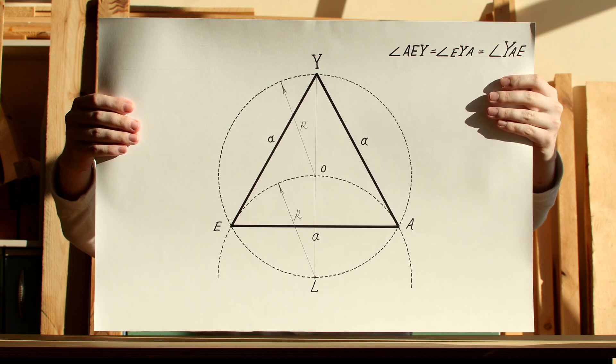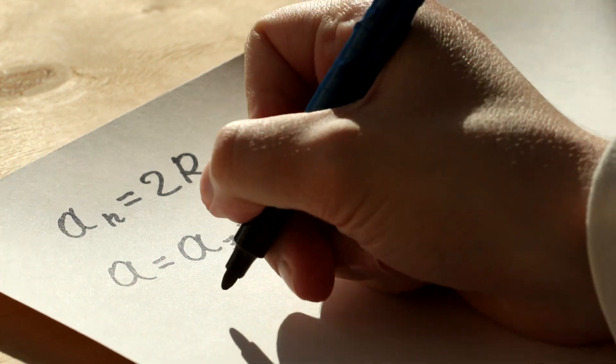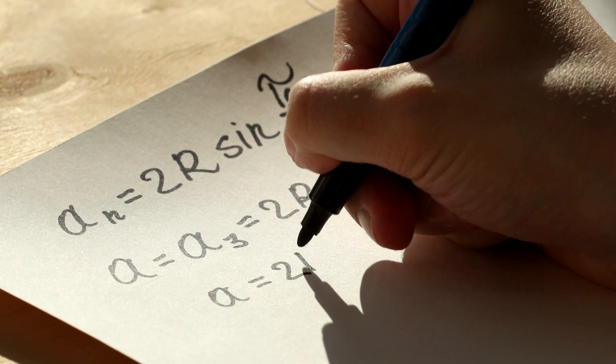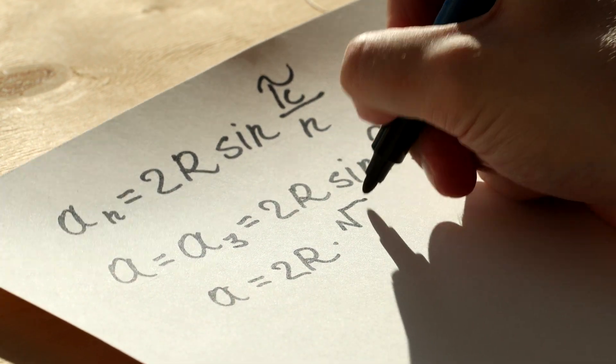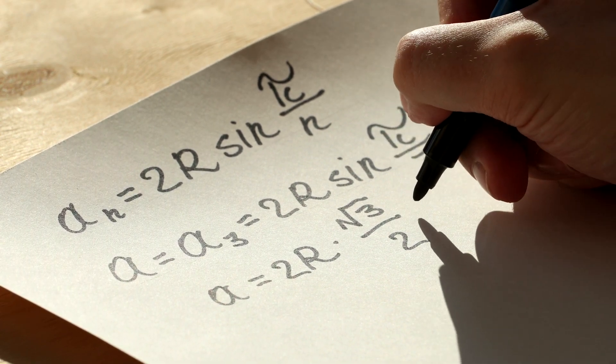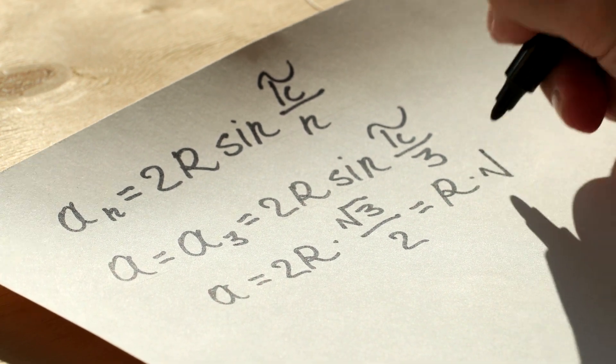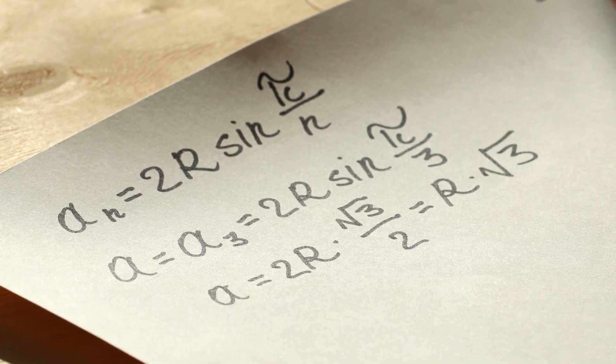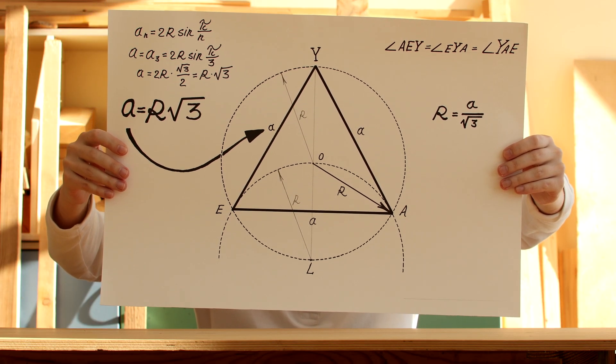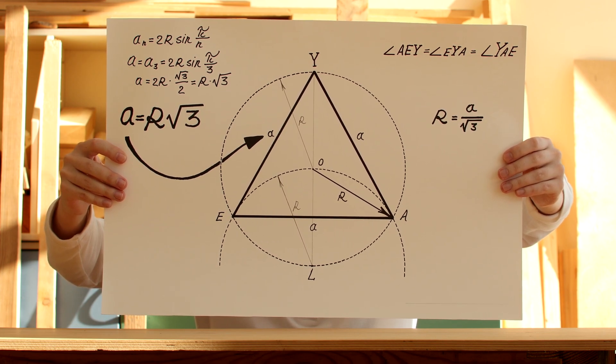The side length of an equilateral triangle can be calculated using the equation for the regular polygon side. We need to take n equal to the number 3. The length of a side of an equilateral triangle is equal to the product of the radius of the circumcircle of this triangle and square root of 3.